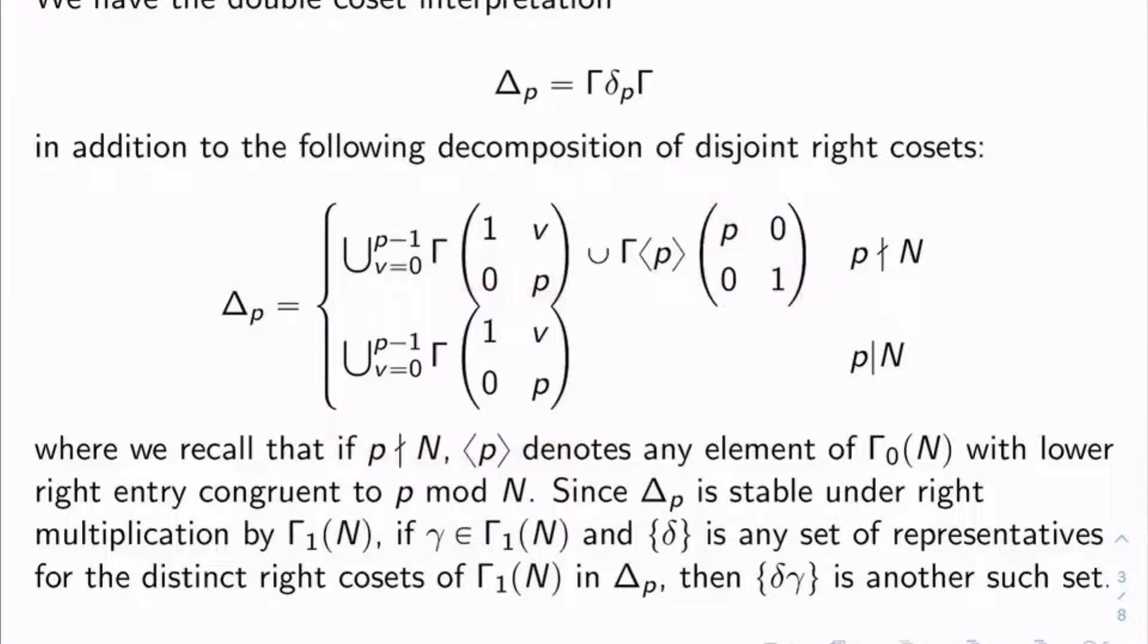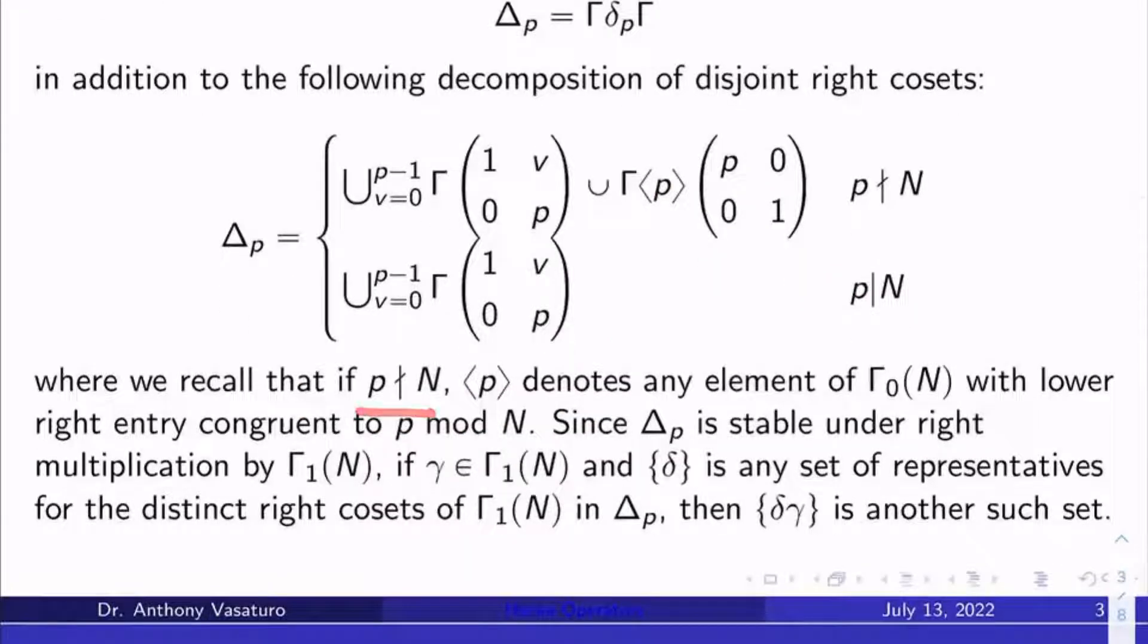Now, first of all, recall that if p doesn't divide n, what does diamond of p mean? It denotes any element of gamma sub 0 of n with a lower right entry congruent to p mod n. We talked about this before. Now, this should look somewhat familiar to you. If you remember the videos on Hecke correspondences, this matrix here is the multiplication by p matrix. This is the z plus v over p matrix. And that's no accident.